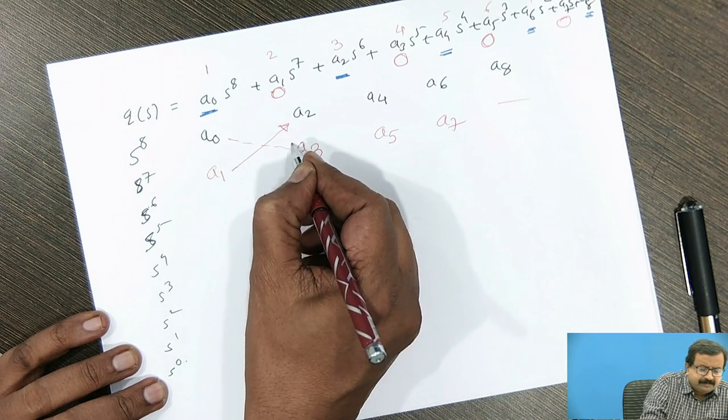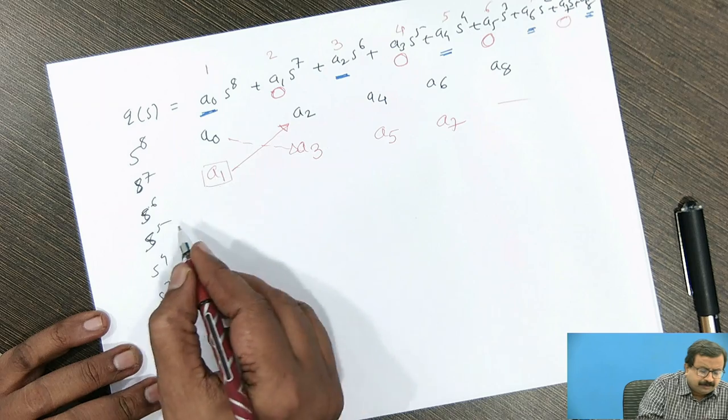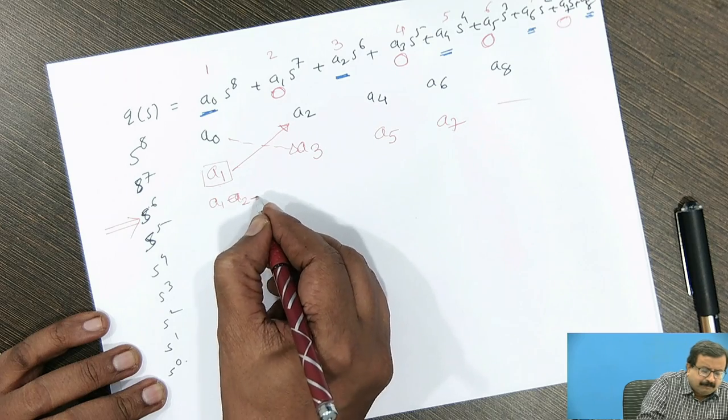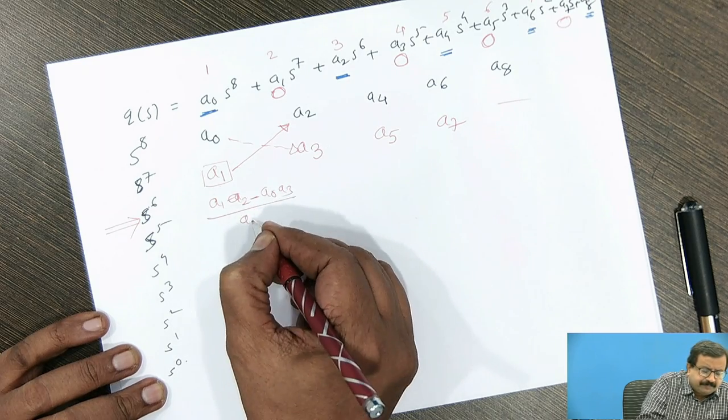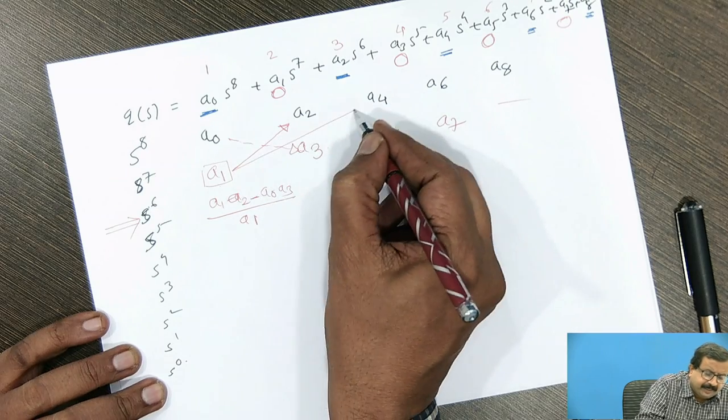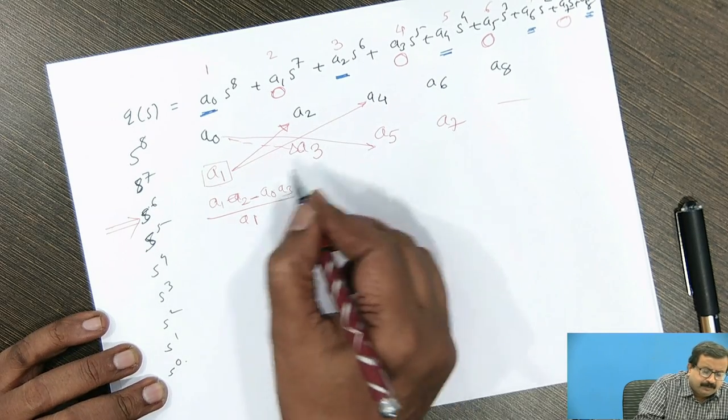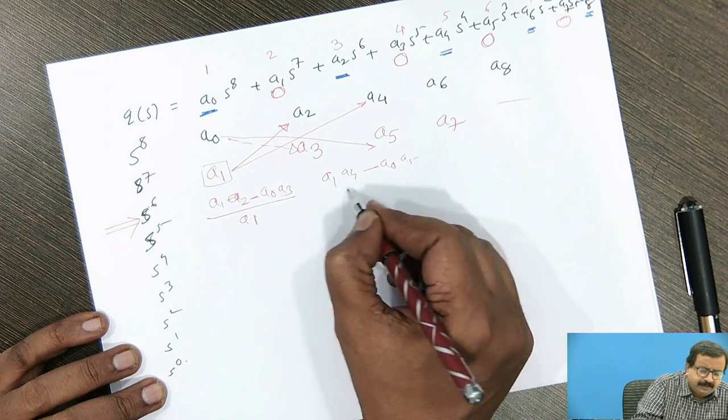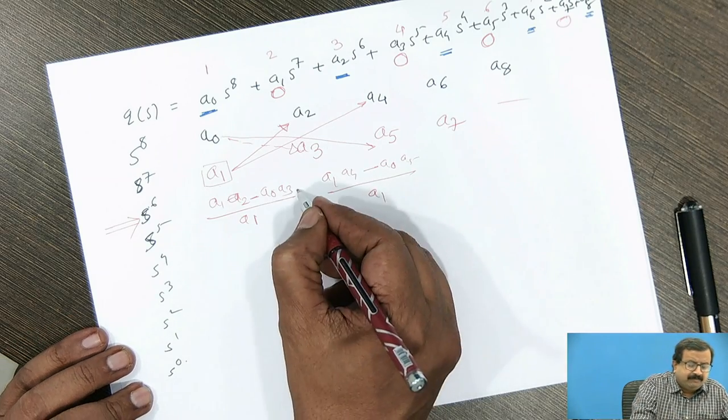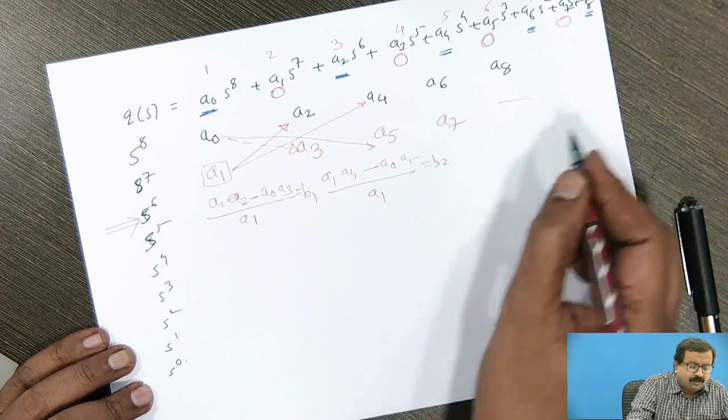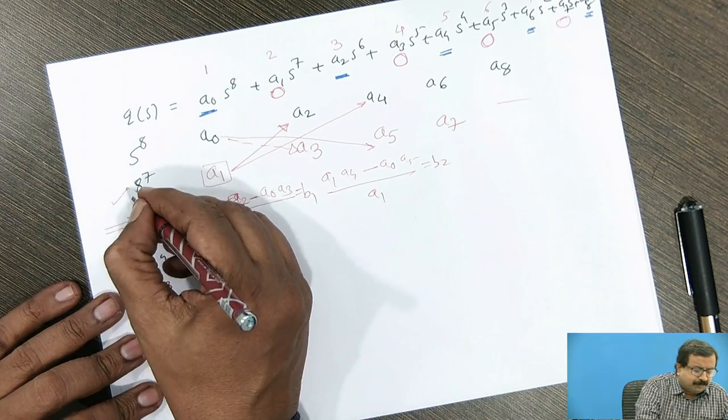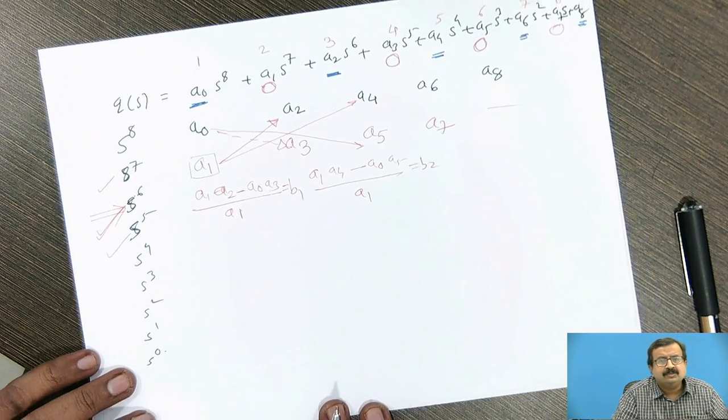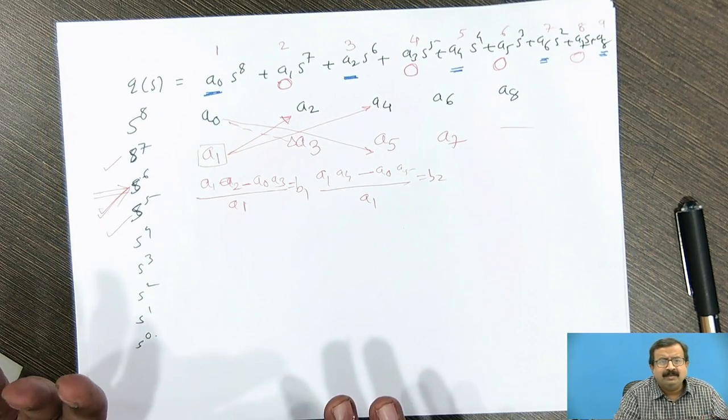Then Routh said that if you prepare this, you make the next row by multiplying this, subtracting this and divide it by this. So the first element in this row will be a1 times a2 minus a0 times a3 divided by a1. For this, a1 times a4 minus a0 times a5 divided by still a1. So likewise you can prepare the table. Then we will call these numbers as b1, b2 and so on. Then for our next table, this is our first row and this is our second row. For next, this is first row and this is second row and you can proceed in this particular way.